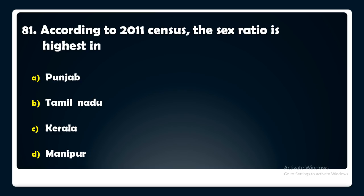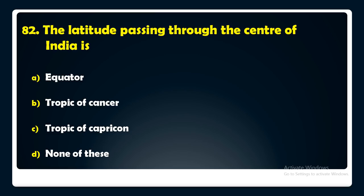The latitude passing through the center of India is — equator, Tropic of Cancer, Tropic of Capricorn, or none of these? The answer is: the latitude passing through the center of India is the Tropic of Cancer.